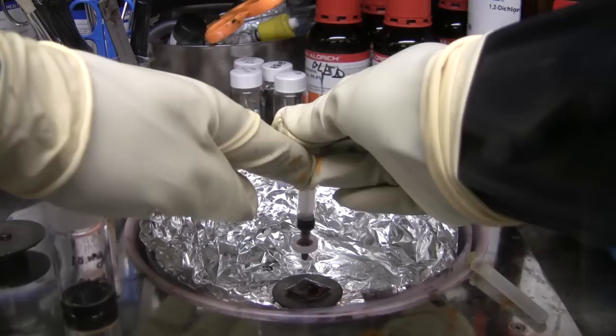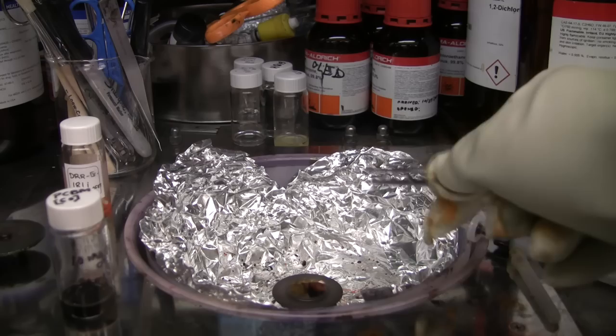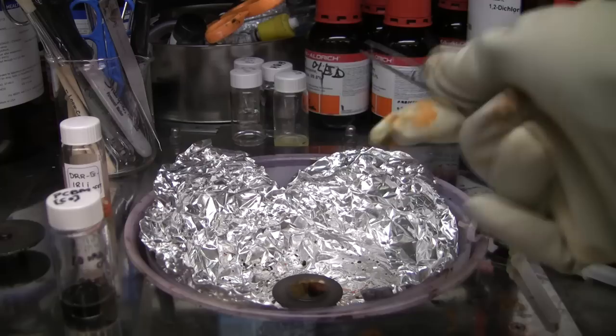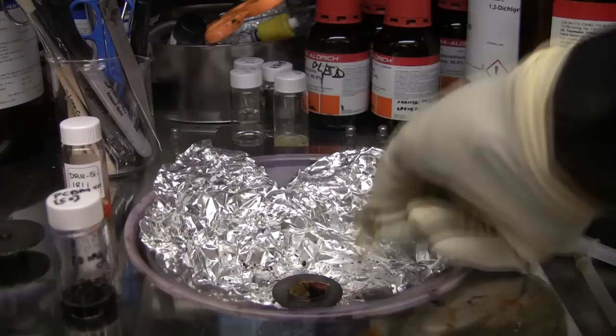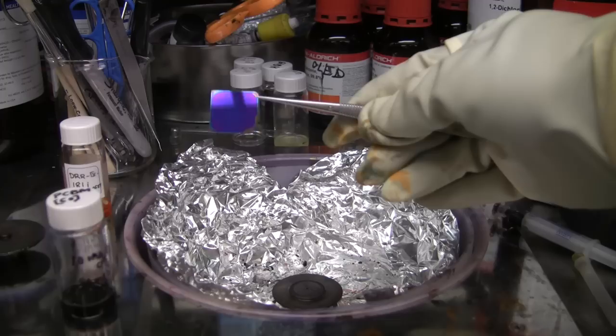So basically right now we are spin coating this semiconductor at 1000 rpm for 60 seconds. And the speed and time depends on what kind of thicknesses you want. So in this case we have around 80 to 90 nanometer of PCBM, but generally we can change the speed to get thicker films or thinner films. So now we have a nice film on this. You could see slightly blue color of the PCBM film on this substrate. And the next thing will be to place these substrates for metal deposition.